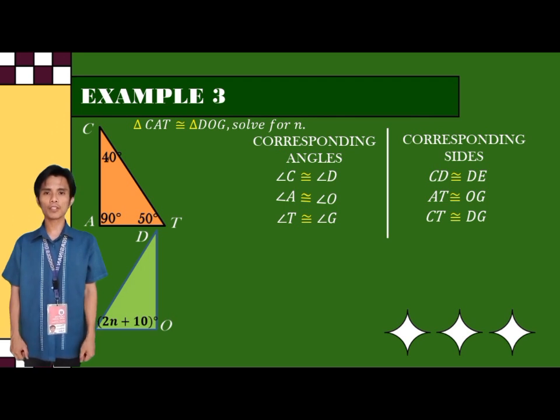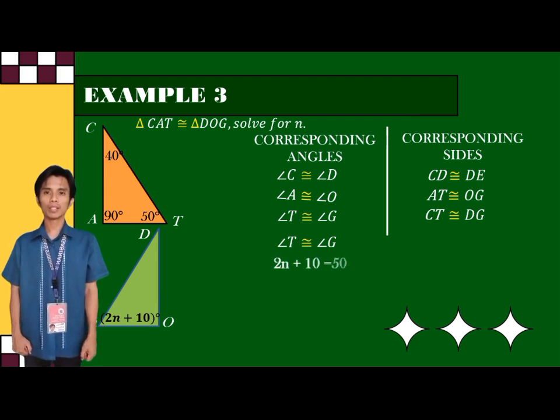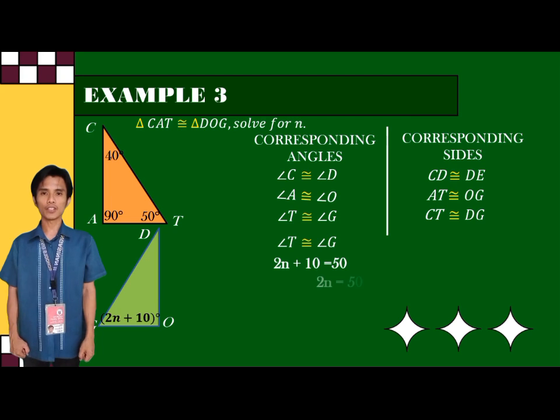And from this statement, we can now form an equation. The equation will be 2N plus 10 is equal to 50 degrees.